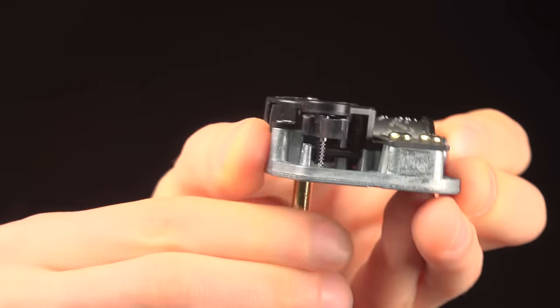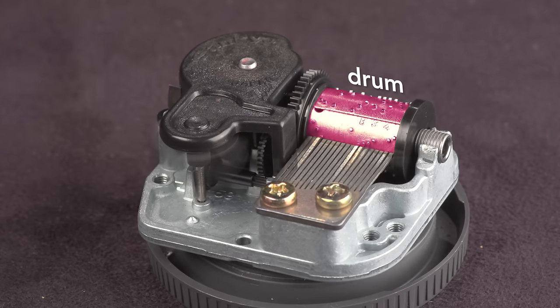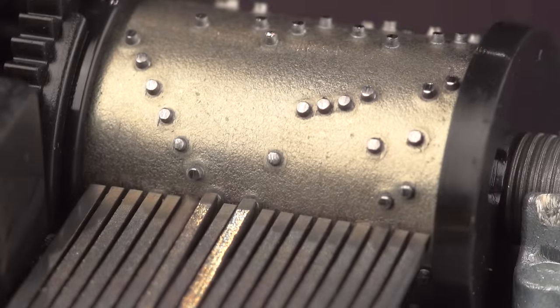I'm sure you know how it works. Wind it up, and it plays a tune. The melody is programmed on this rotating drum. The drum has protrusions called pins that pluck the teeth of the comb.